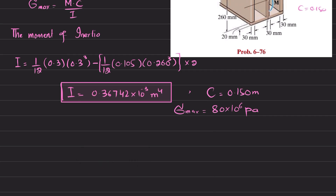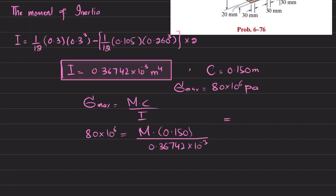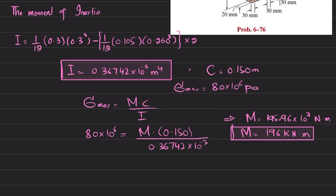Now we have all the values. The maximum bending stress formula is σ_max = Mc/I, so: 80 × 10⁶ = M × 0.150 / (0.36742 × 10⁻³). Solving for M, the moment comes out to be 195.96 × 10³ N·m, or approximately M = 196 kN·m. This is the value of the moment applied to this cross section.